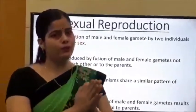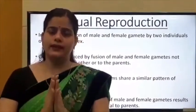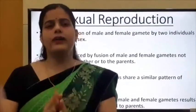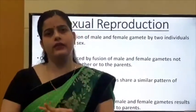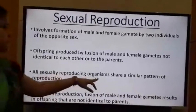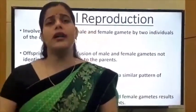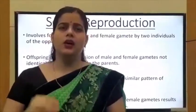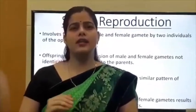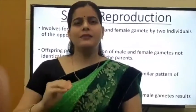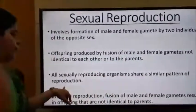Offspring are not identical because the zygote is formed by a combination of male and female gametes — half the number of chromosomes comes from the male and half from the female. That is why the zygote is diploid in nature. All sexually reproducing organisms share a similar pattern of reproduction, even though they differ in physiology, morphology, or anatomy.